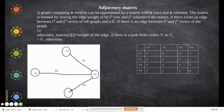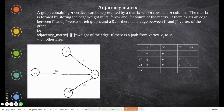Another representation is the adjacency matrix, where both rows and columns represent vertices. A graph containing n vertices is represented by a matrix with n rows and n columns. The value is 1 if there is an edge between those two vertices, and 0 if there is no connection. Unlike the incidence matrix, adjacency matrix checks whether an edge exists between two vertices.